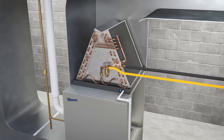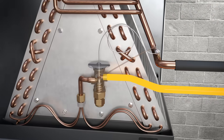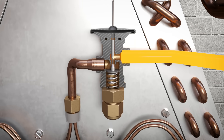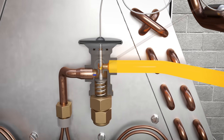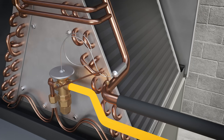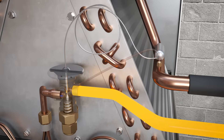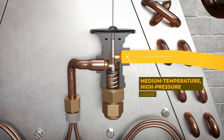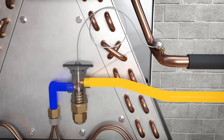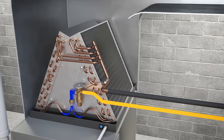The refrigerant then flows to the metering device — in this case, a thermal expansion valve is used. A pin inside the valve adjusts the flow rate of refrigerant depending on the temperature at the evaporator end, using a sensing bulb. As it flows through the valve, its pressure drops significantly, releasing a low temperature, low pressure liquid-vapor mix.